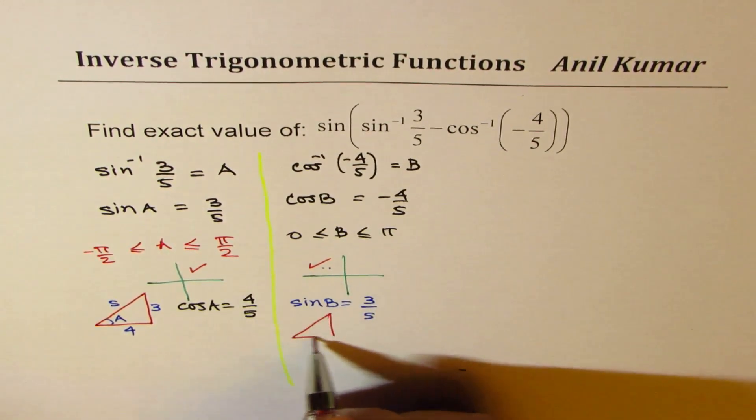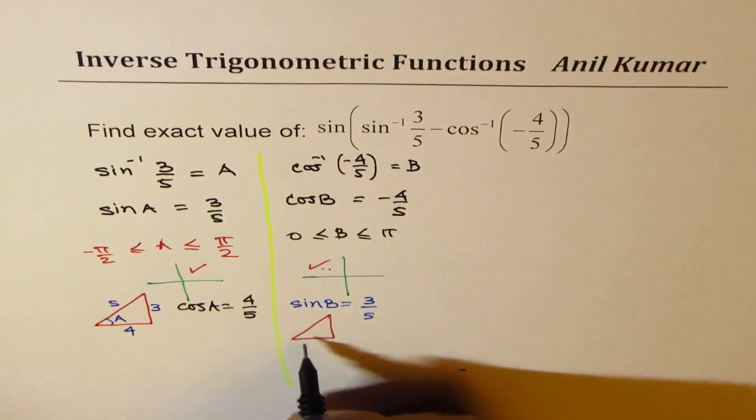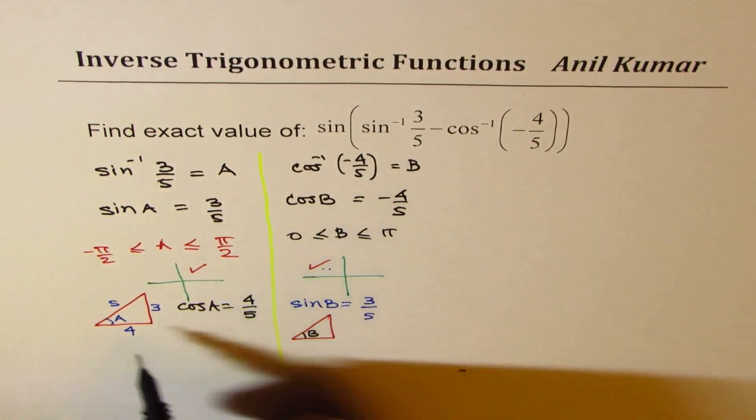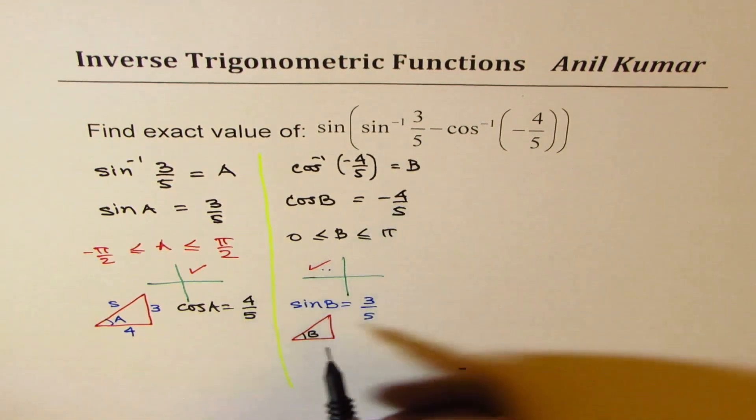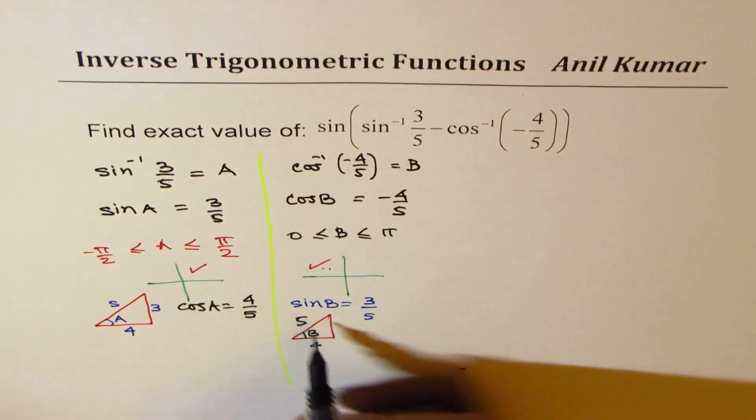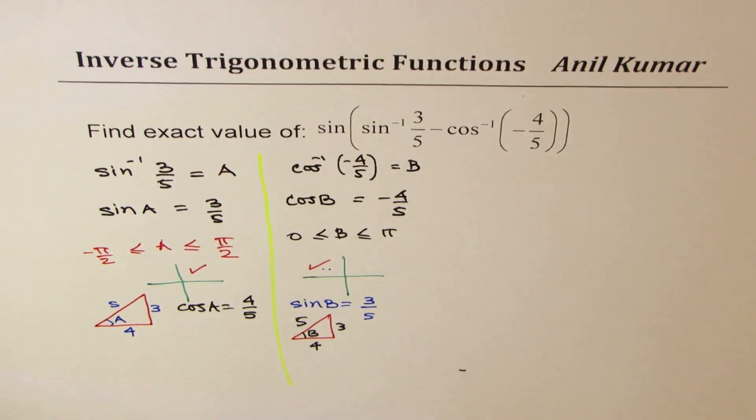Let me redraw this triangle, triangle B, no harm. Since those values, this is only one time we have this type of example. 4 over 5 means adjacent side over hypotenuse. So, that will be 3. So, we have found both values of sine A, cos A, sine B, cos B.